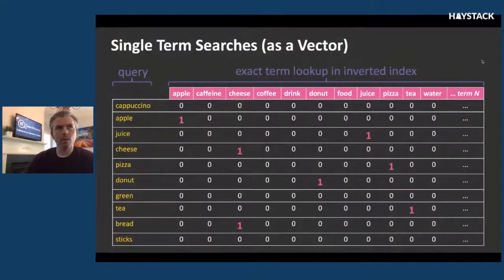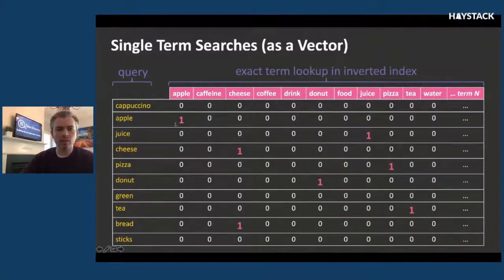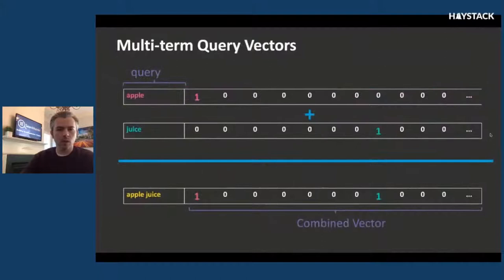If you think of this in terms of the inverted index, whereas you might have a query with keywords like apple, cheese, juice, you can represent a query as a vector where the vector has a one in the position where apple exists and a zero in every other position. The length of this vector has one element for every possible word in your documents — this is known as one-hot encoding. You can then represent apple juice as a vector where both apple and juice have a one in their respective positions, and add those two vectors together. This is similar to the set intersection we saw with the inverted index.